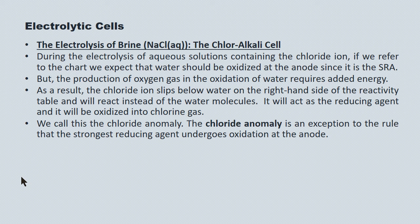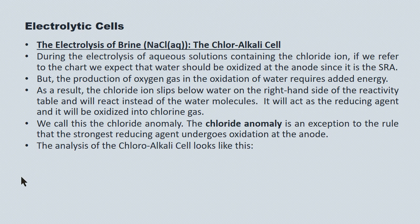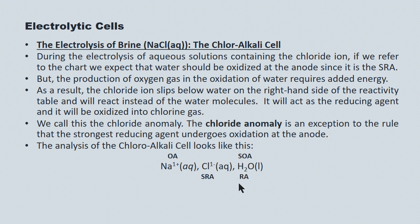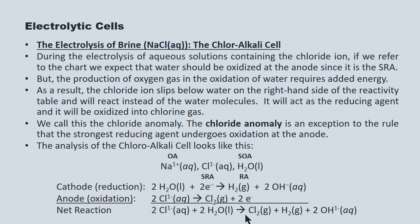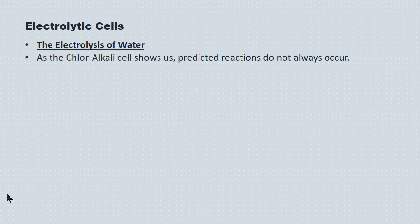The analysis of sodium chloride in aqueous solution: we have sodium ions, chloride ions, and water as our species. Water is the strongest oxidizing agent, and it's also technically the strongest reducing agent — but because of the chloride anomaly, the chloride ion slips below water on the reducing side of the table and acts as the strongest reducing agent. The overall redox gives us chlorine gas produced at the anode and hydrogen gas produced at the cathode, which also produces hydroxide. The chloroalkali cell shows us that predicted reactions don't always occur and demonstrates the chloride anomaly.